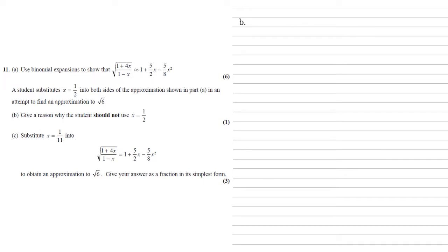We now need to give a reason why the student should not use x equals a half. Well, we've got 1 plus 4x to the power of a half in our question and we're using a binomial expansion on this. So by the rules of the expansions, that 4x, the modulus of that has to be smaller than 1, which means modulus of x has to be smaller than a quarter. But half is bigger than a quarter, so we can't use x equals a half.